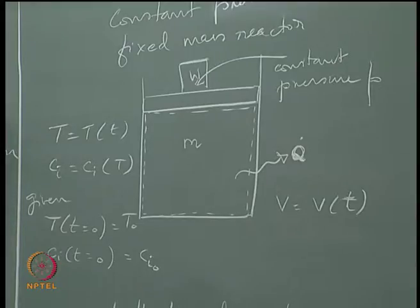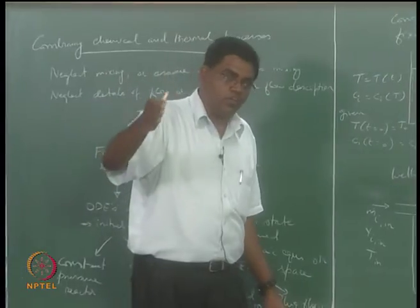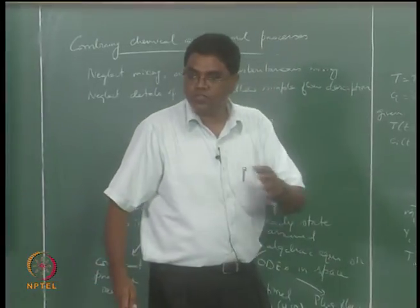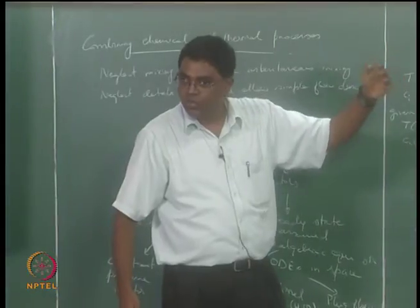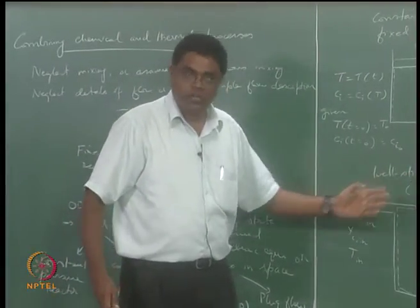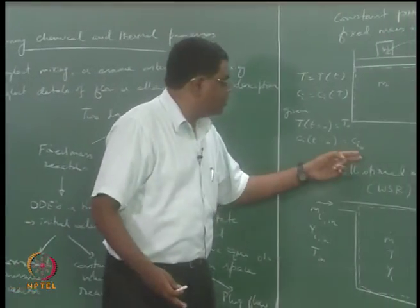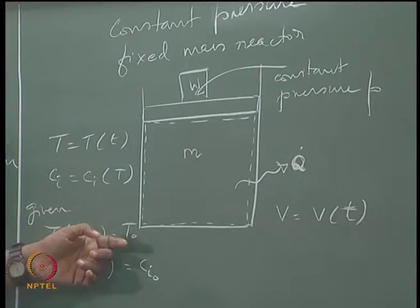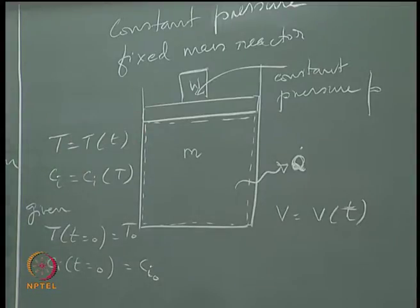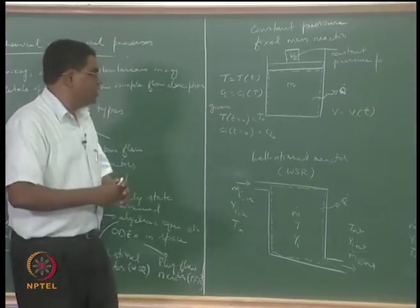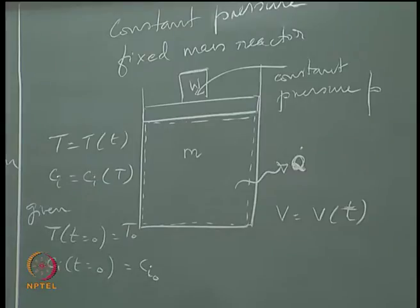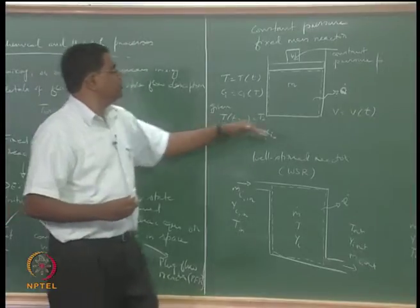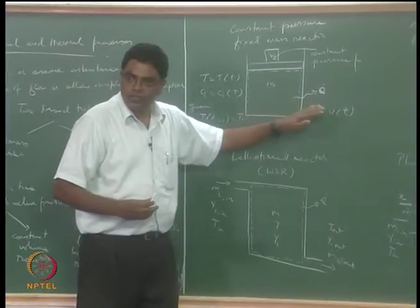We are looking for the time evolution of temperature and time evolution of concentrations of the species. If you started out with certain species concentrations C_i0 for i going from 1 to N, you will start with reactants having non-zero values. Products and intermediates will typically have zero values to start with for C_i0. You also indicate an initial temperature, and with t greater than 0, you integrate your ODE system in time to get how this evolution happens.